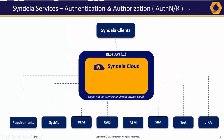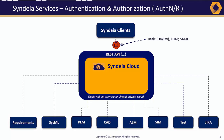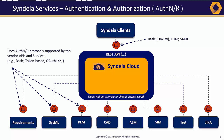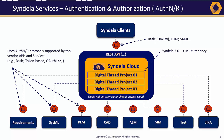Data security and access control has always been a central concern for Cendaya, both at the user interface to the Cendaya REST API and at the Cendaya-to-repository API interfaces. In Cendaya 3.6, we introduce a new layer of security at the digital thread project level.